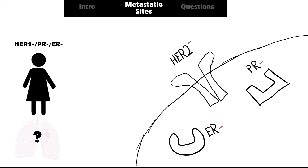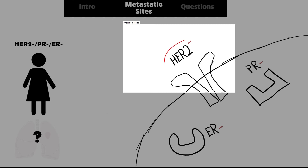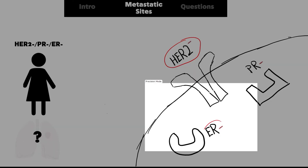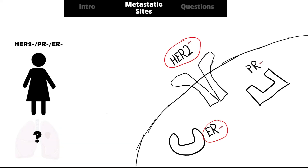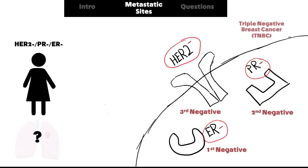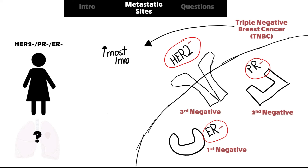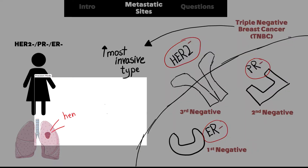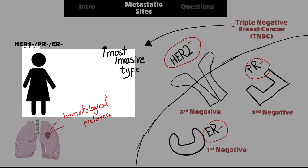Now let's move to the third subtype: triple negative breast cancer. It consists of HER2 negative, PR negative, and ER negative. There is no amplification of HER2, and there is absence of both ER and PR. It is called 'triple negative' because all three markers are negative. It is one of the most invasive types, and the most common metastatic site is the lungs. It also shows hematopreference, meaning low frequency of axillary lymph node dissemination.